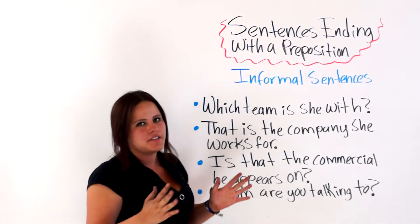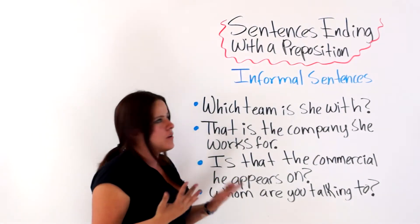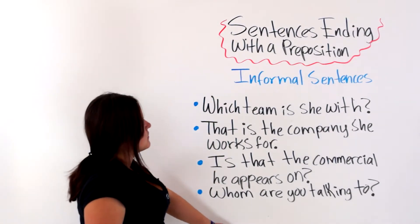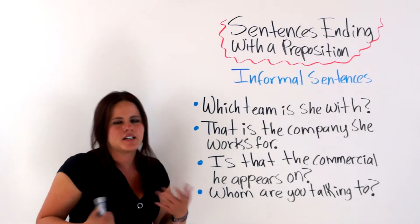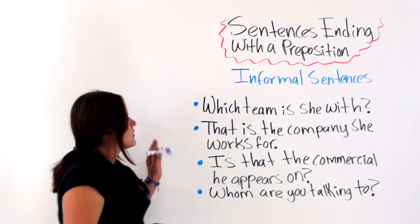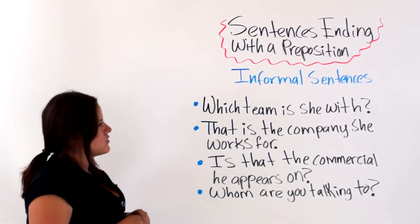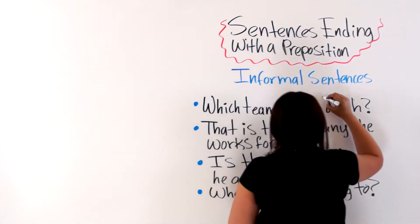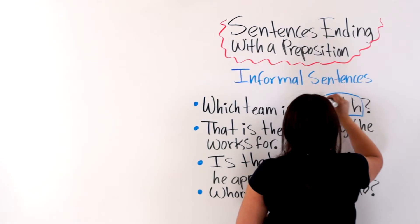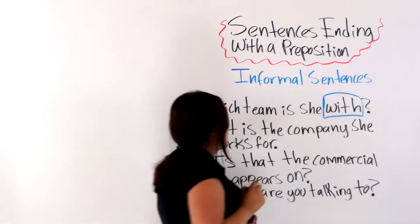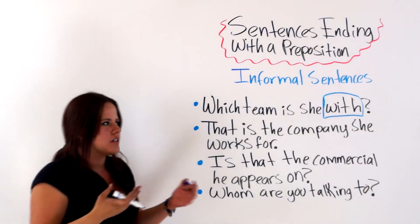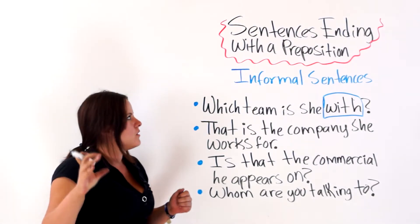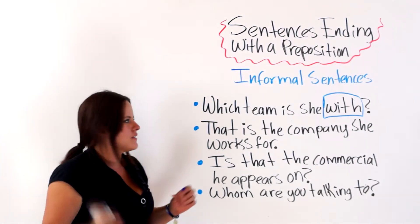Okay, sentences that end with a preposition are usually informal sentences. I have four examples of informal sentences that end with a preposition. The first one says, which team is she with? Okay, we have with. This is a preposition. So our question, our sentence is ending with a preposition and it is also an informal sentence.